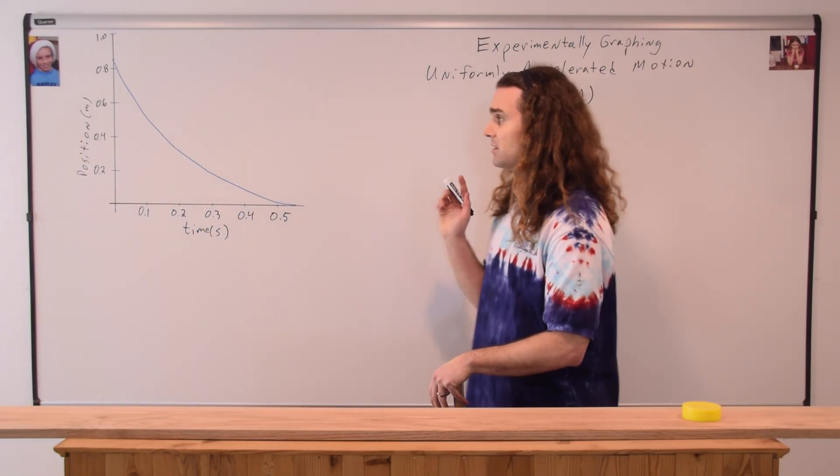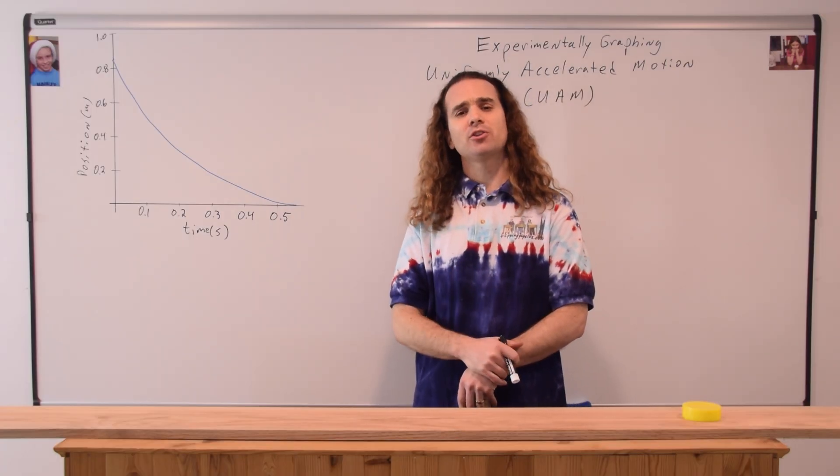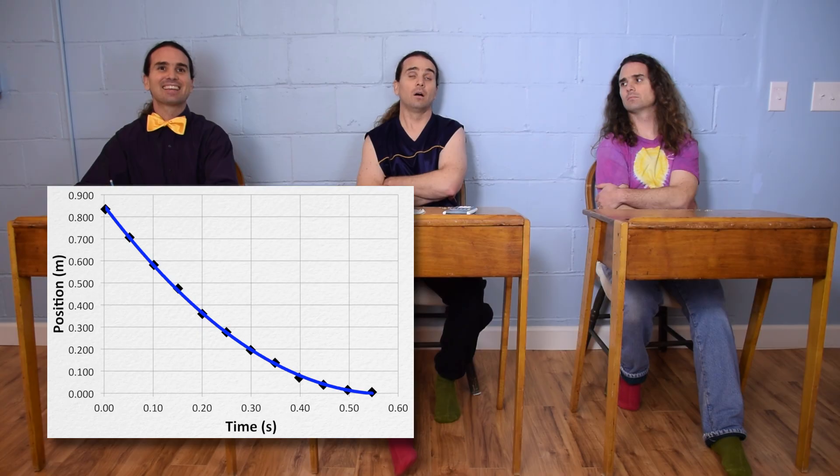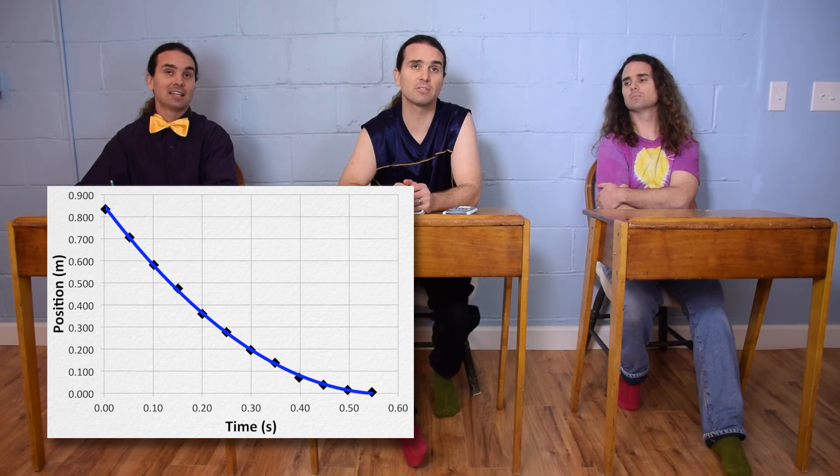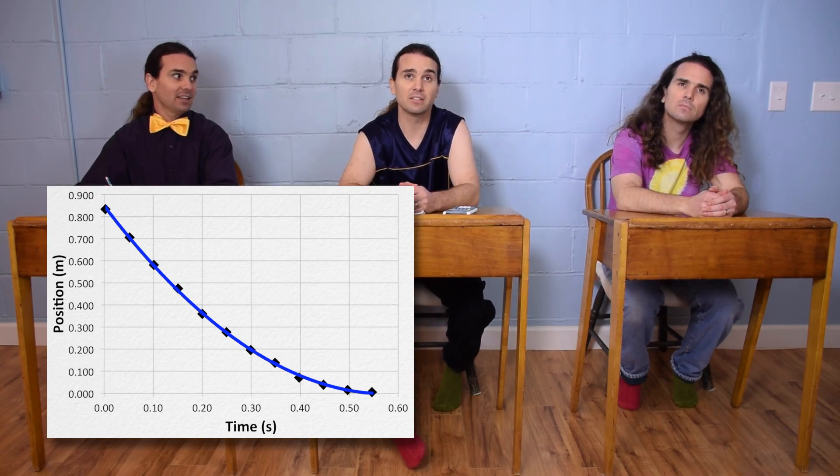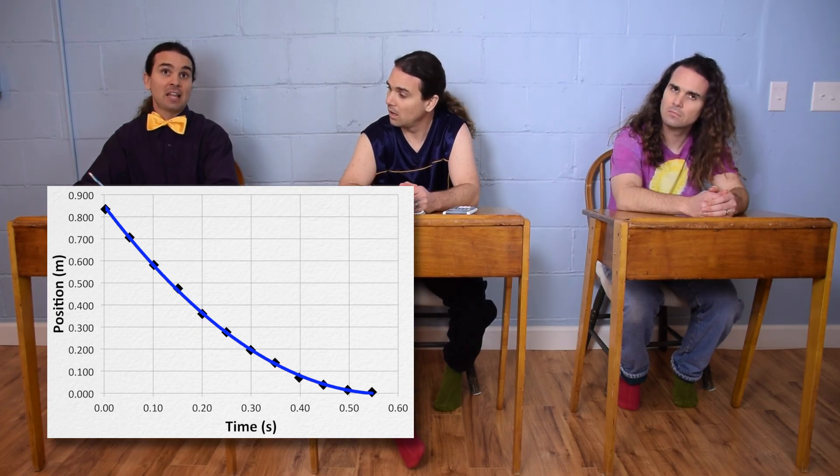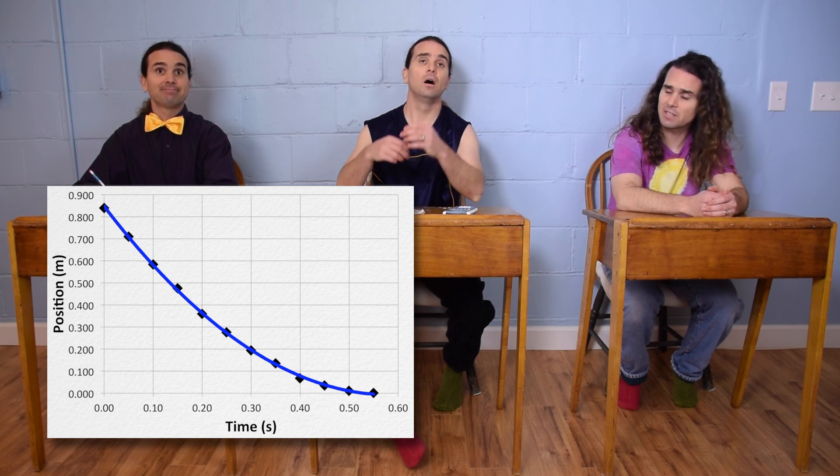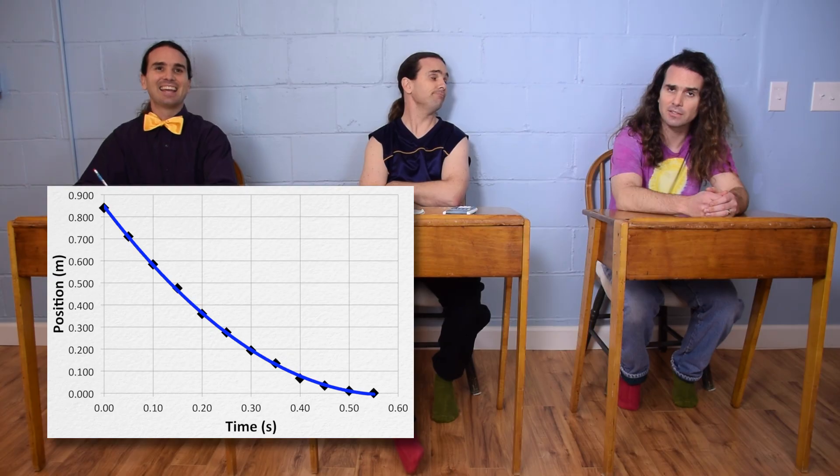Considering this is the graph of position as a function of time for the sliding puck, Bobby, what should the graph of velocity as a function of time look like? We know velocity is the slope of the position as a function of time graph and the initial slope of the line is negative, so the initial velocity is negative. And as time increases, the slope of the line gets closer and closer to zero, so the velocity should get closer to zero. So the velocity as a function of time graph starts out negative and then increases at a constant rate to zero.